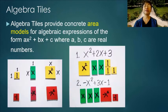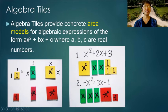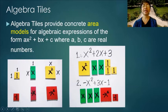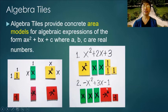Algebra tiles provide concrete area models for algebraic expressions of the form ax squared plus bx plus c, where a, b, and c are real numbers. We have one unit tile, the x tile, and the x squared tile. Their negative counterparts are colored red: negative 1, negative x, and negative x squared. To represent x squared plus 2x plus 3, we use one x squared tile, two x tiles, and three unit tiles. To represent negative x squared plus 3x minus 1, we use one red x squared tile, three x tiles, and one red unit tile.